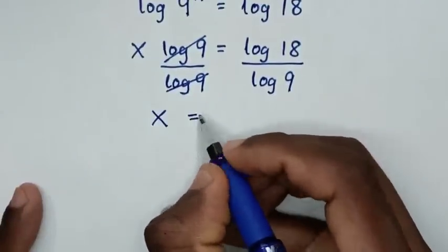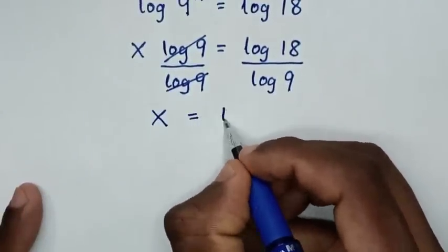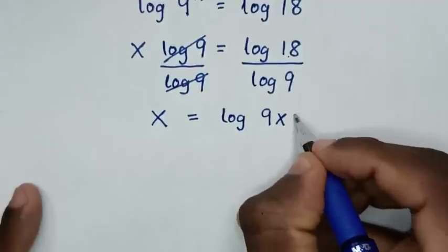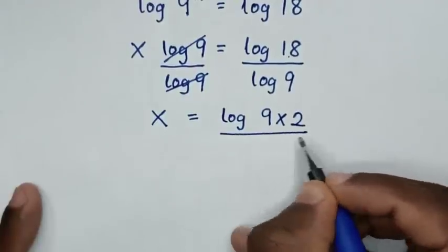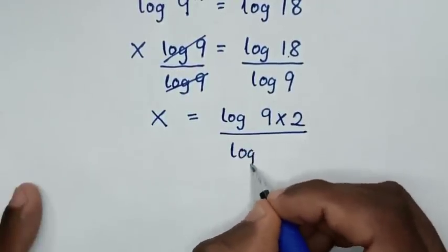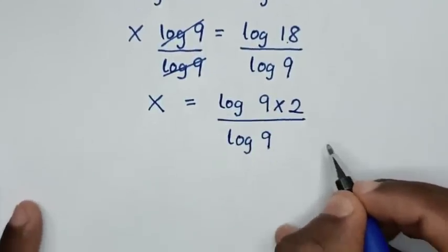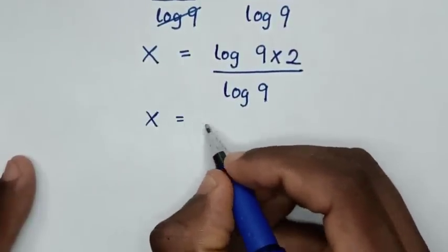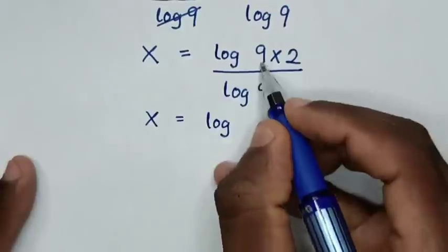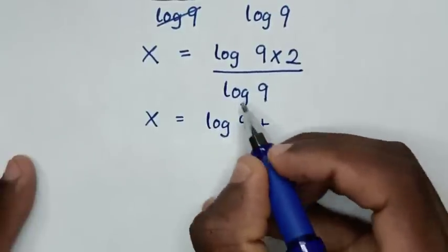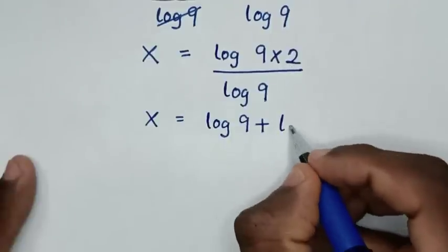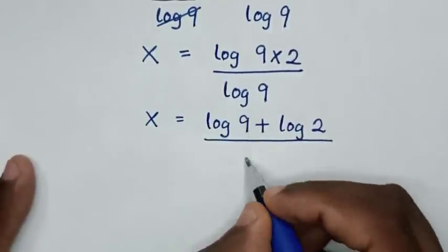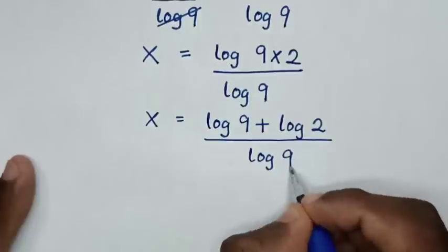Then this log of 9 and this log of 9 will cancel, so it will be x is equal to log of 18. Since 18 is the same as 9 times 2, over log of 9. Then in the next step, it will be x is equal to log of 9 plus log of 2, over log of 9.